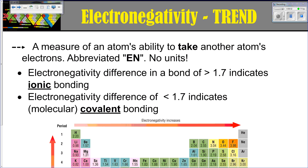Electronegativity is the measure of an atom's ability to take — or more accurately, its pull on — another atom's electrons. It is abbreviated EN in this presentation, and we don't use units for electronegativity.